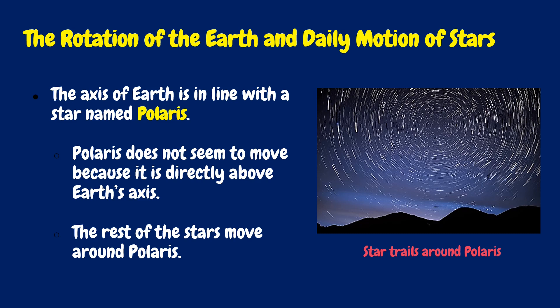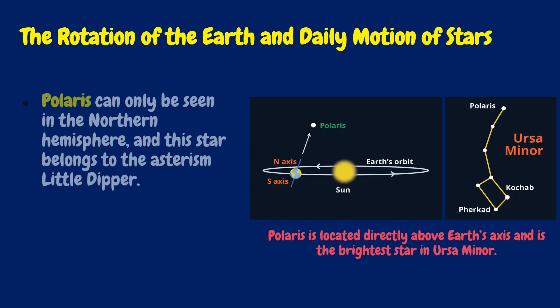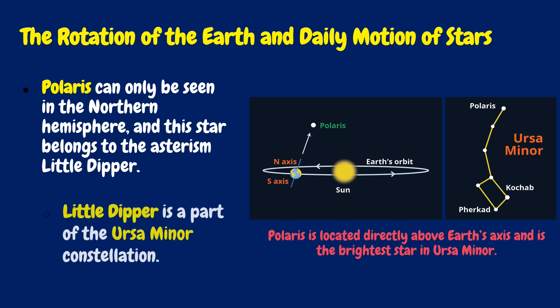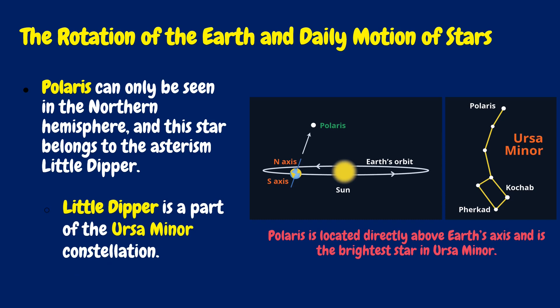The North Star, or Polaris, is famous for holding nearly still in our sky while the entire northern sky moves around it. That's because it's located nearly at the North Celestial Pole, the point around which the entire northern sky turns. Polaris marks the way due north. Polaris can only be seen in the northern hemisphere, and this star belongs to the asterism Little Dipper, which is a part of the Ursa Minor constellation.